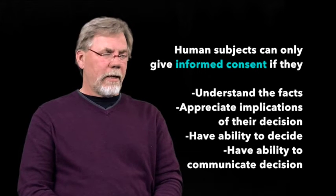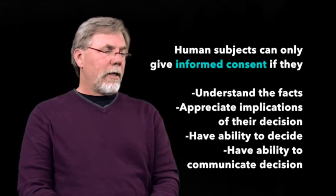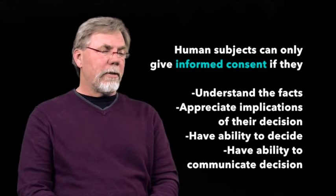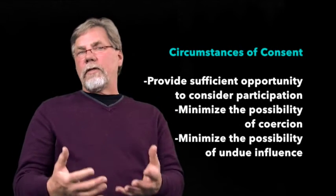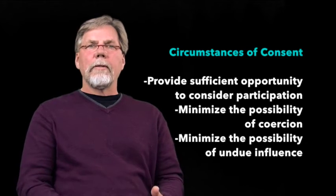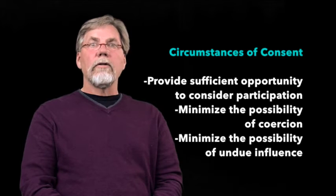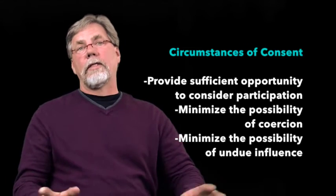Now, one of the important aspects of human research protections is informed consent. And this is that principle, the respect for persons or autonomy that we talked about from the Belmont Report. And what that means is that for legally informed consent, the subject must understand the facts. They must appreciate the implications of their decision to participate. They must have the ability to decide and also have the ability to communicate their decision. Circumstances of consent include providing a sufficient opportunity for a person to review the study plan in a consent form. There is no coercion or minimizing coercion. The person can be in another room or they can take the consent form home and read through it. And that there is no undue influence on looking at the consent form and deciding whether or not to consent.